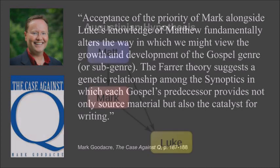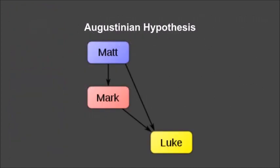The priority of Mark is not universally granted, however. Though boasting a few defenders in modern times, one historically important Synoptic theory is called the Augustinian hypothesis. This hypothesis posits that the Synoptic Gospels were written in the order in which they appear canonically in the New Testament — Matthew first, Mark second, and Luke third. One defender of this theory in recent memory is John Wenham.